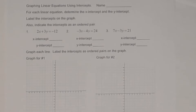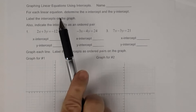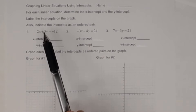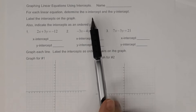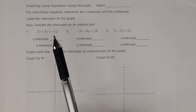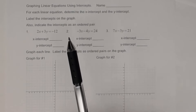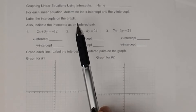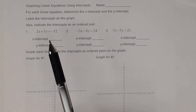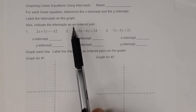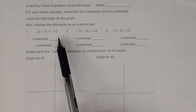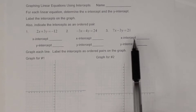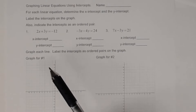This is the key to the worksheet on graphing linear equations. On this worksheet you want to use intercepts. For each linear equation, determine the x-intercept and the y-intercept, and then label the intercepts on the graph. When you graph these, make sure you follow directions, which is to label the intercepts. Also indicate the intercepts as an ordered pair. Make sure when you put in the intercepts in these blanks, that you write as an ordered pair.